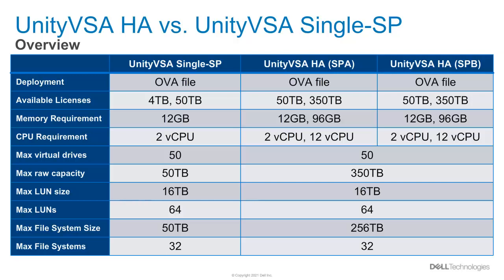Here is a quick comparison between Unity VSA Single SP deployments and Unity VSA HA. You'll notice that the same OVA file is used to deploy both solutions. However, since two storage processors are deployed for Unity VSA HA, the memory requirements and CPU requirements are both doubled compared to Unity VSA Single SP. Also, the 4TB Free Community Edition license is only available for Unity VSA Single SP solutions, which means that a paid professional license is required to utilize the Unity VSA HA solution.